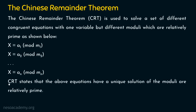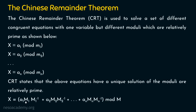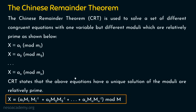Chinese remainder theorem states that the above equations have a unique solution when the moduli are relatively prime. So when m1, m2 up to mn are relatively prime to each other, there exists a unique solution x. The formula for finding x is: x equals a1·M1·M1_inverse plus a2·M2·M2_inverse, up to an·Mn·Mn_inverse, all mod capital M.